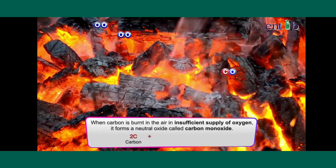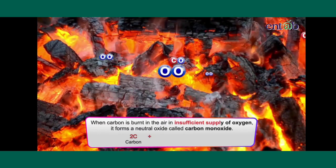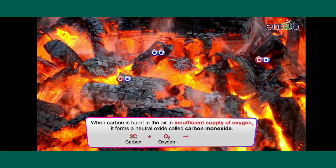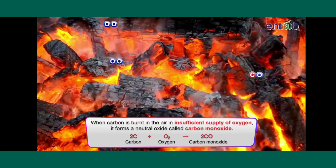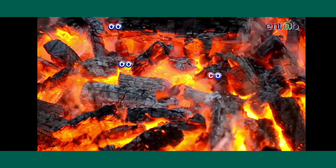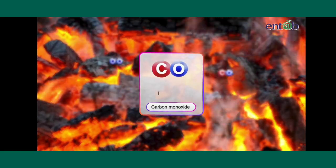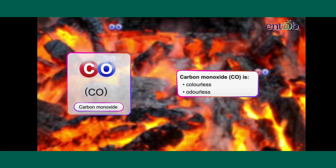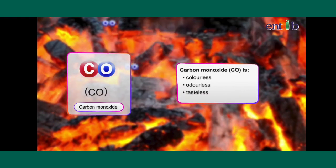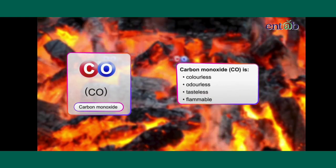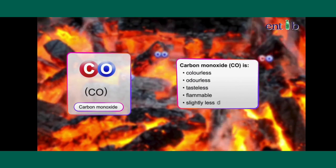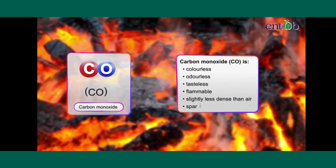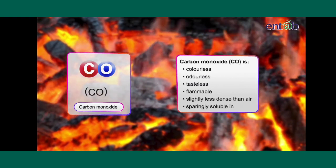When carbon is burnt in air with an insufficient supply of oxygen, it forms a neutral oxide called carbon monoxide. The chemical formula for carbon monoxide is CO. It is a colorless, odorless, tasteless, and flammable gas that is slightly less dense than air and only sparingly soluble in water.